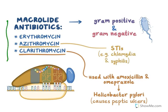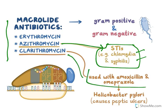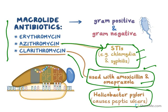Macrolide antibiotics like erythromycin, azithromycin, and clarithromycin have got specific clinical uses. Azithromycin can be used to treat sexually transmitted infections caused by Chlamydia and syphilis, and clarithromycin is used with the antibiotic amoxicillin and omeprazole to treat Helicobacter pylori-caused peptic ulcer infection.